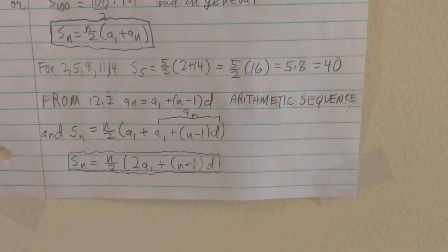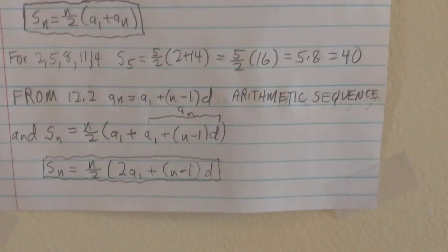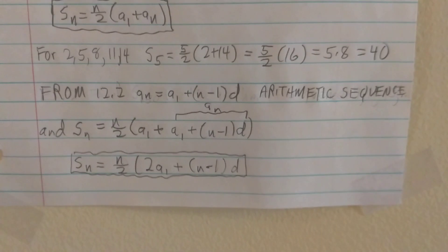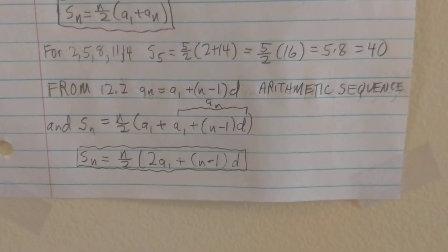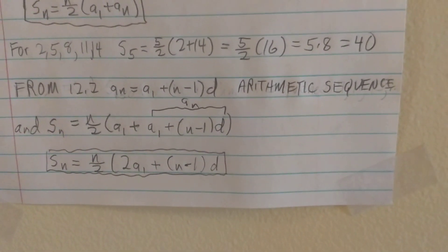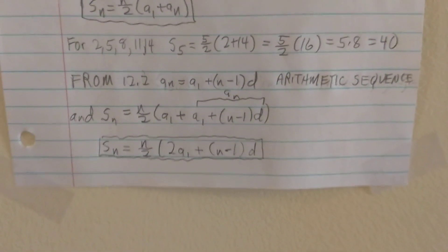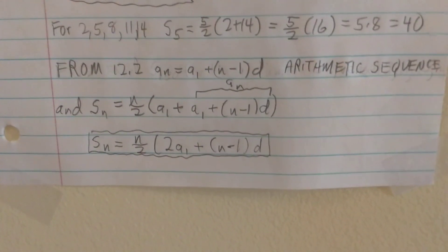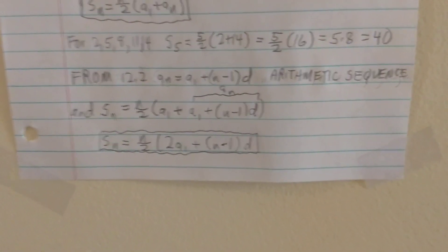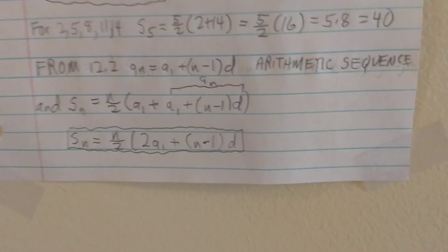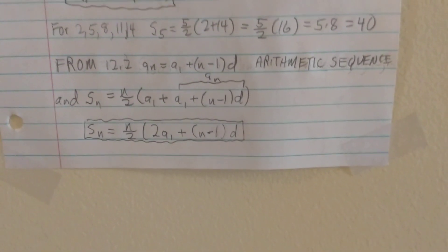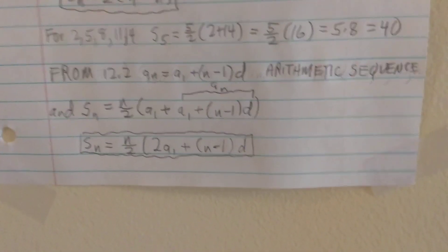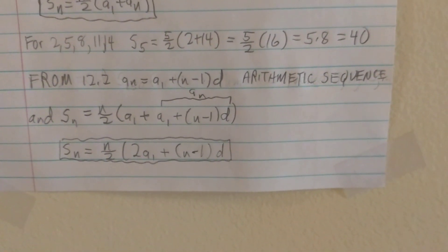Extending this to arithmetic sequences in general, we remember from Tuesday on 12.2 that the general sequence term for an arithmetic sequence was a sub n equals the first term a sub 1 plus n minus 1 times d. We substitute that in for a sub n in our series equation. So S sub n is n over 2 times a sub 1 plus a sub n, which is a sub 1 plus n minus 1 times d. Therefore, S sub n equals n over 2 times 2a sub 1 plus n minus 1 times d.